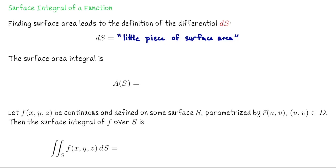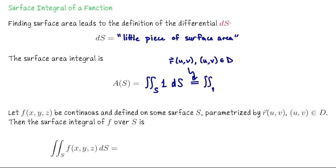If we're computing a surface area integral — when we compute the area of a surface — we can view that as double integrating 1 DS. As we saw, how we actually compute that is we parametrize our surface with R of U and V, for parameters U and V coming from some domain D, and then we double integrate over D the length of the cross product R_U cross R_V, dU dV. So we can relate this new differential D capital S to dU dV: DS is like the length of this cross product dU dV.